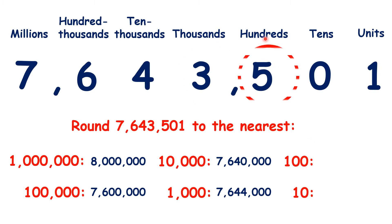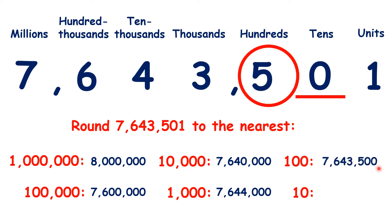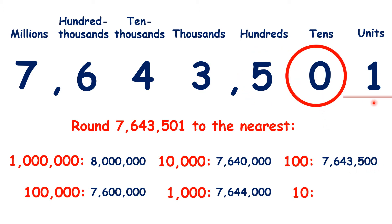To the nearest hundred, we look to the tens, and we have a 0, so we round down to 7,643,500. And to the nearest ten, we look to the units and we can see that we're rounding down, so the 0 in our tens stays at 0, digits to the left stay the same, and the digit to the right becomes a 0, so we have 7,643,500.